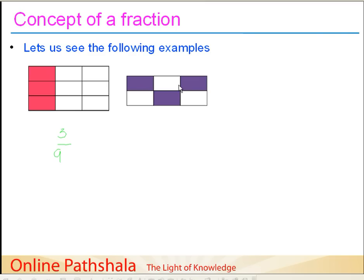We take another rectangle and divide it into six equal parts. In this case also, we have taken three parts which are colored in purple. How can we represent these three parts as part of the whole rectangle, which has been divided into six parts? We first write down the total parts that are shaded — one, two, and three — so we write three here.